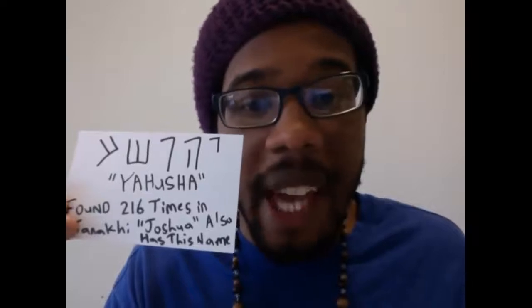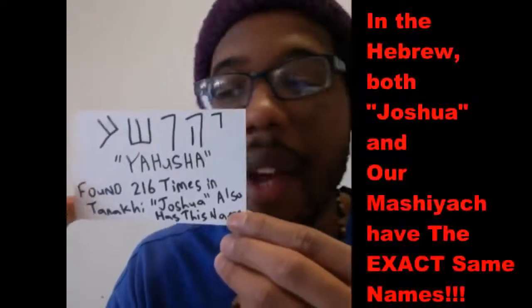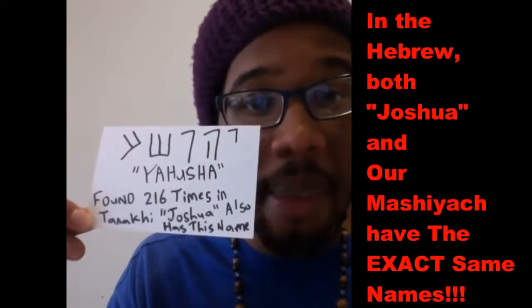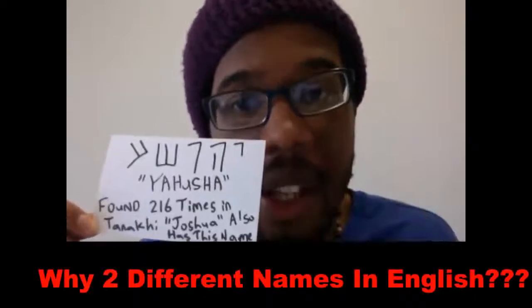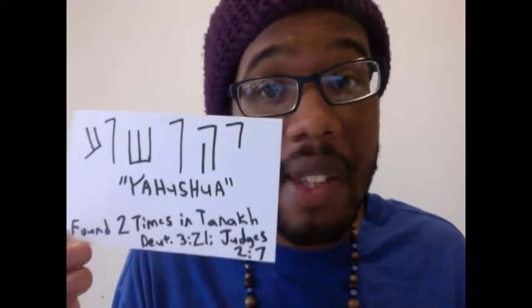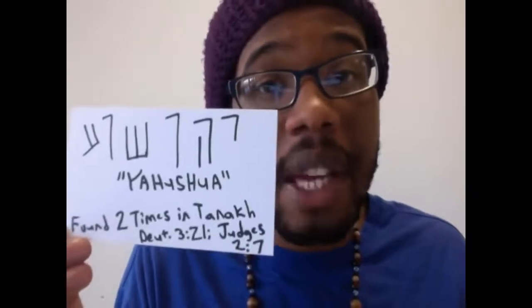The name of our Mashiach, Yahusha, is found over 216 times in the Tanakh — the original Old Testament. Joshua also shares the same name, so it makes no sense that they have two different names in English when they have the same name in Hebrew. You'll also see the name Yahushua, which is actually found twice in the Tanakh — in Deuteronomy chapter 3 verse 21 and in Judges chapter 2 verse 7. The reason I use Yahusha rather than Yahushua is because of its meaning.